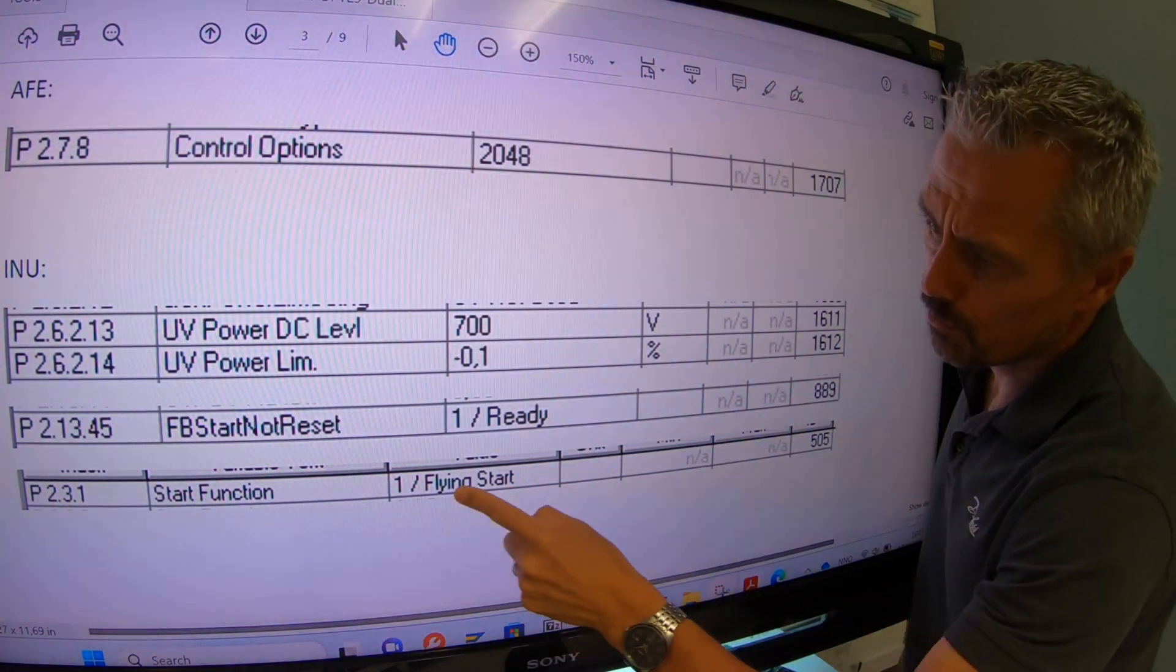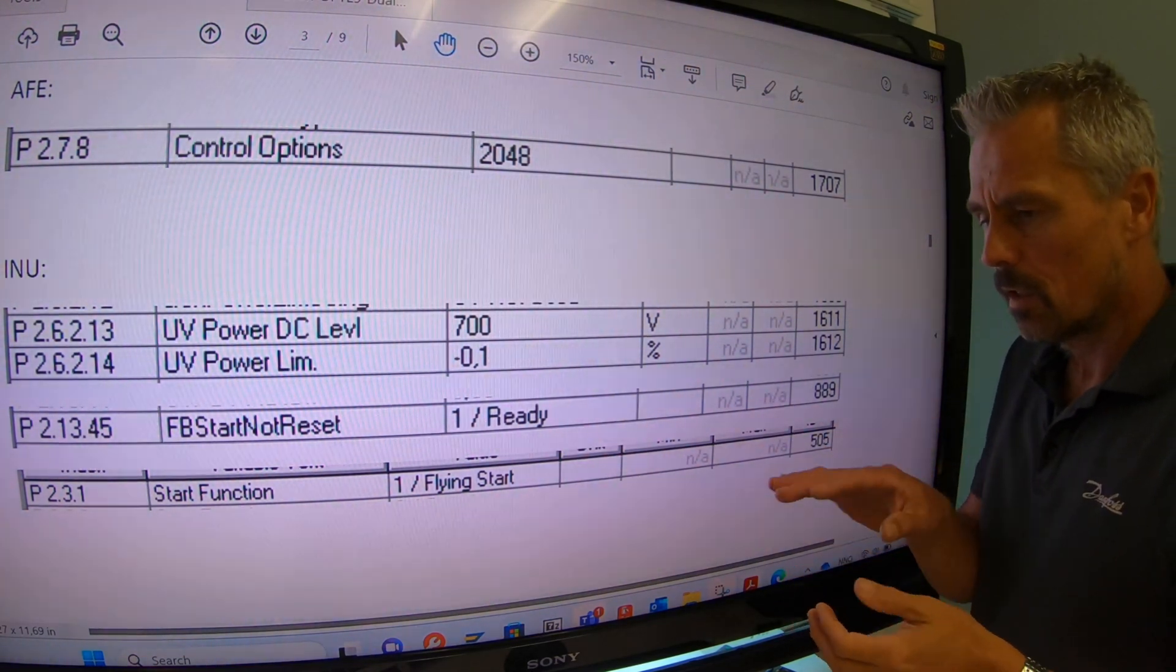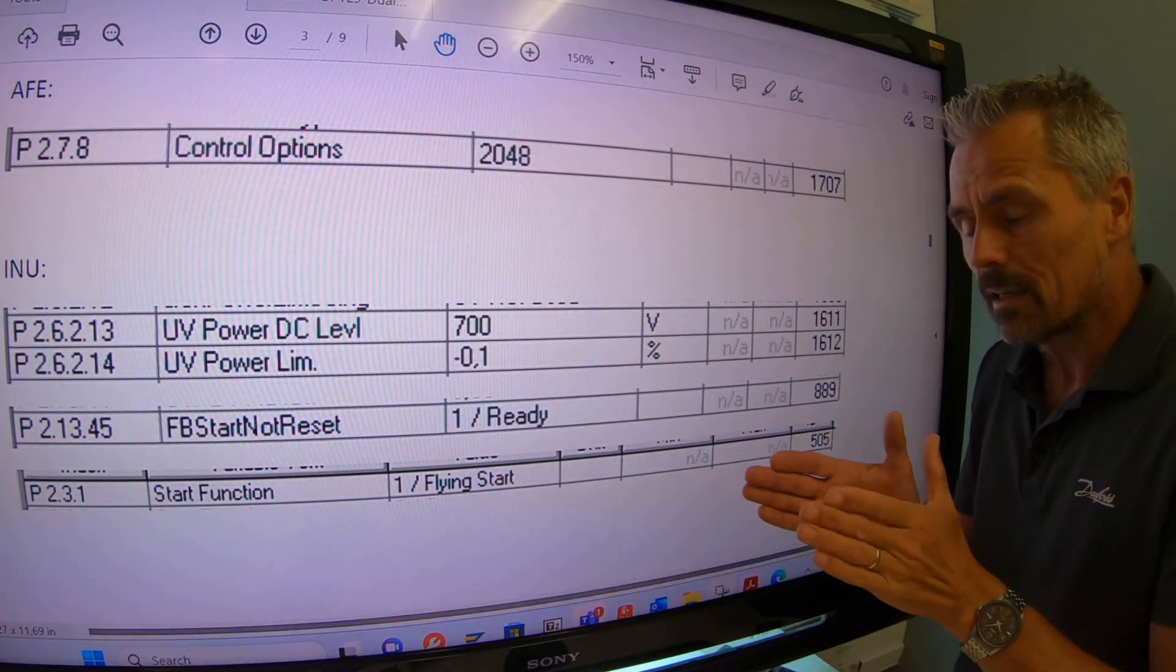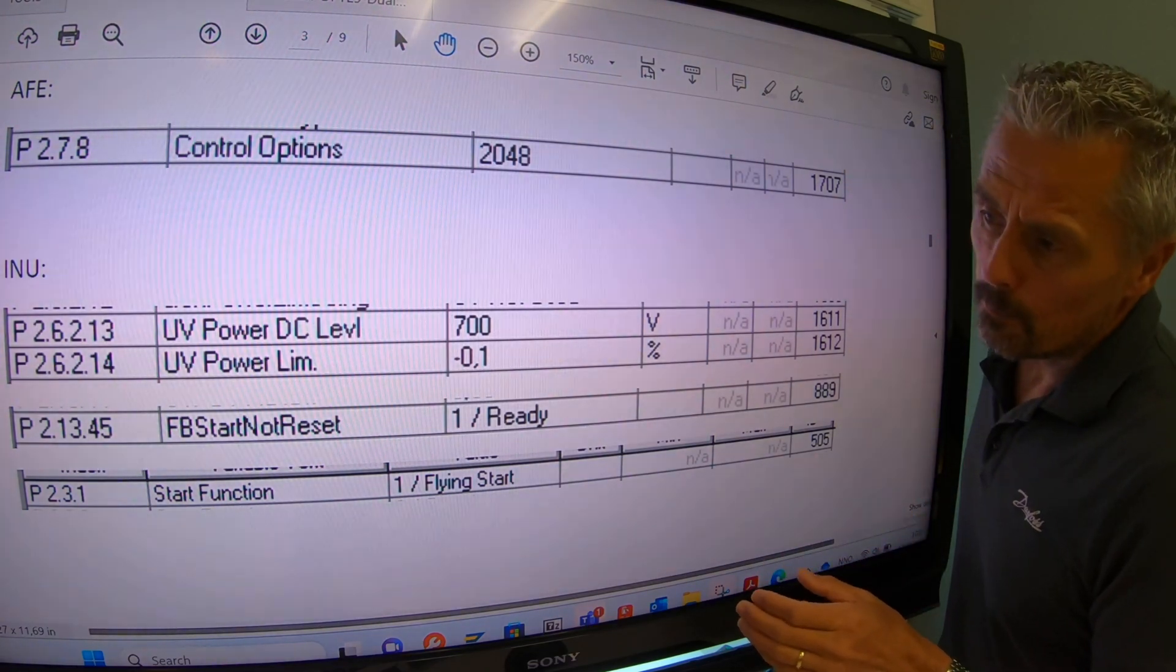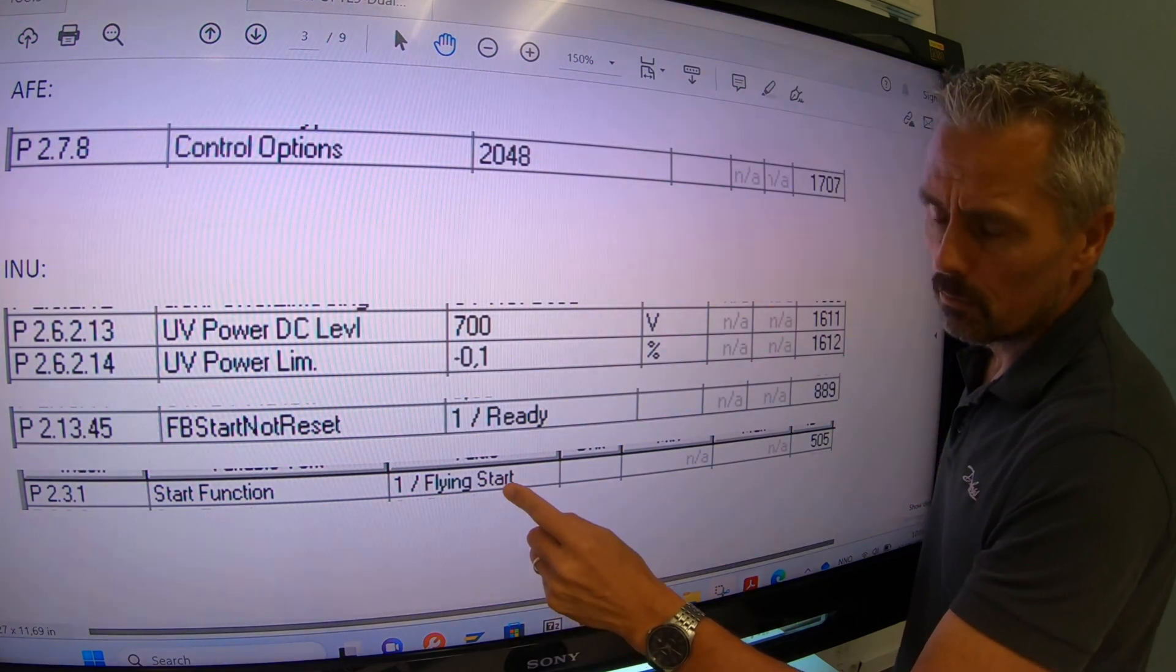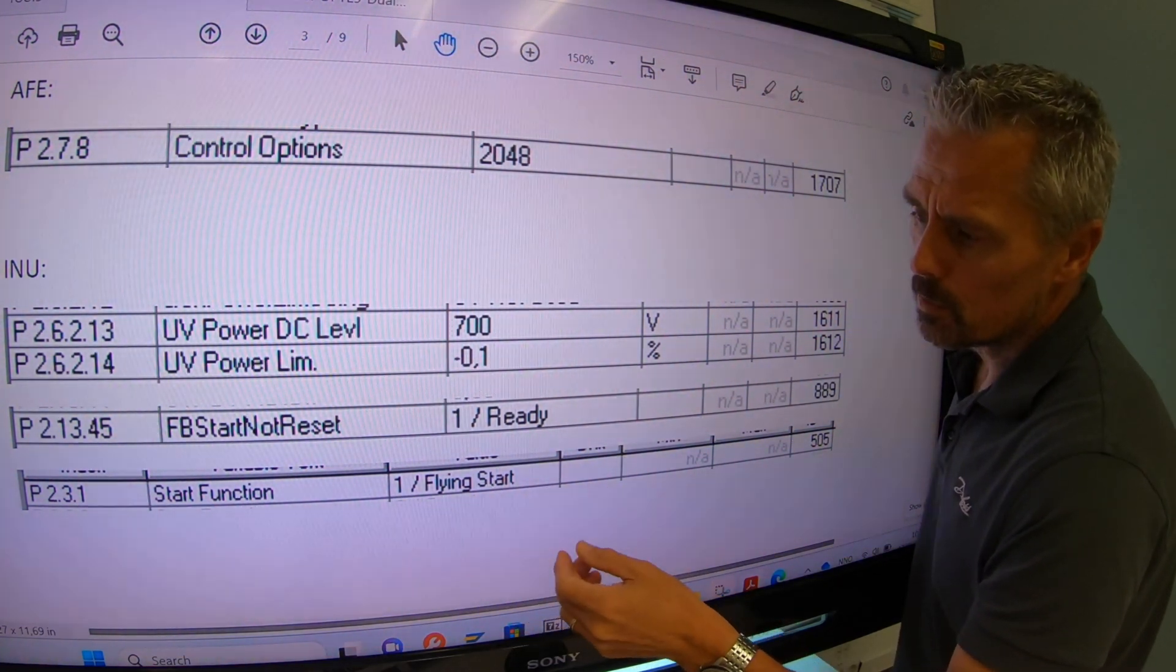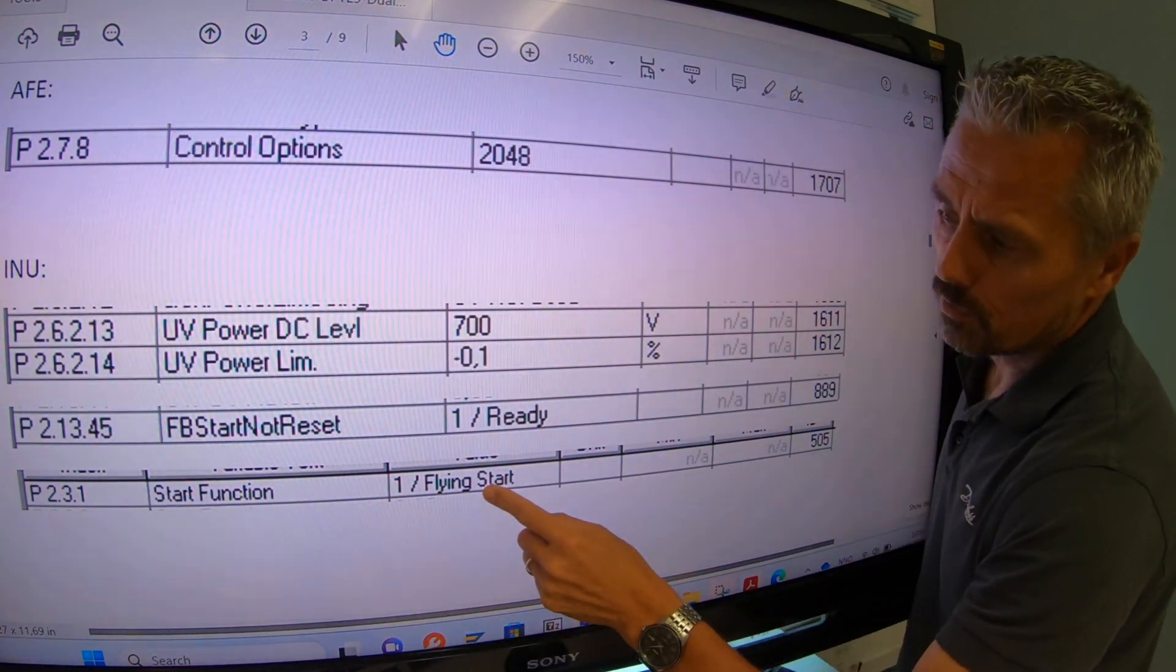And also flying start, the start function to flying start because most likely the shafts will be rotating. Especially if the blackout is very short, then you have rotating shafts. In closed loop, the flying start will be active anyway. But if it's an IF start or an open loop start, then this should be set to flying start.